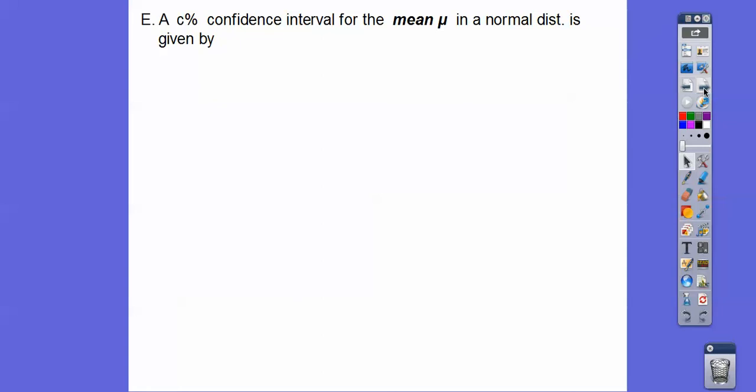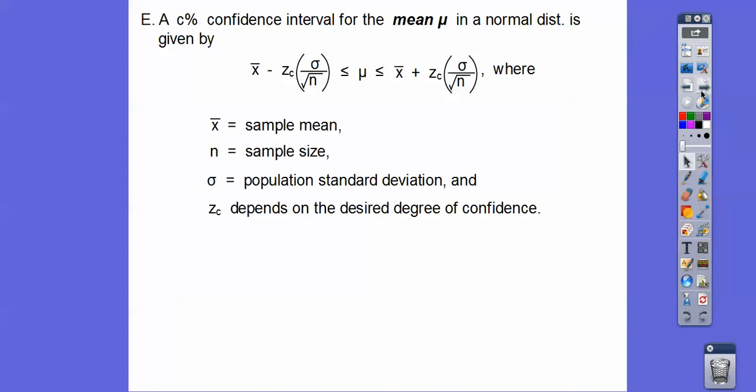So a confidence interval for the mean, the population mean, which is mu—mu is always our population mean—in a normally distributed distribution, is given by this formula. We use the same Z scores depending on if it's 90, 95, or 99. Those are the most common ones we use. 95 is probably the most common. So that's what goes right here. They'll give you the standard deviation, they give you everything, you just got to plug it in. X bar is our sample mean, N is our sample size, sigma is our population standard deviation, and the Z score depends on your desired degree of confidence.